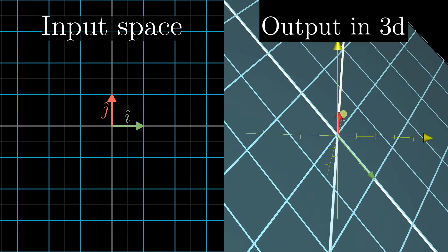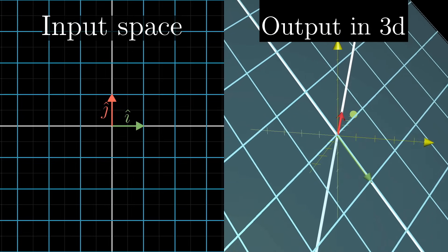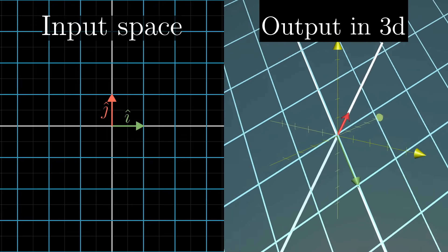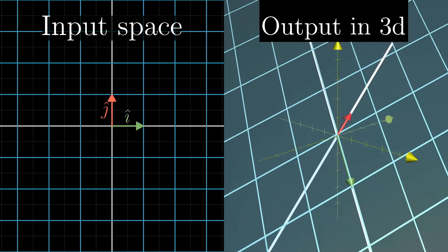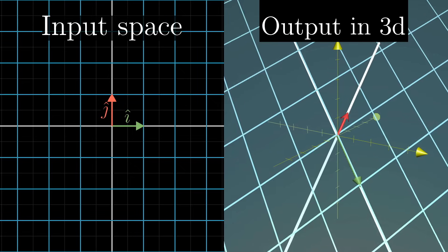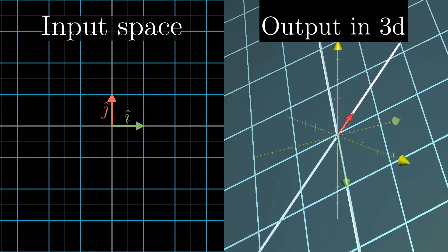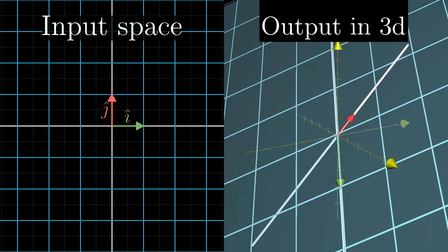What I have pictured here is the input space on the left, which is just 2D space, and the output of the transformation shown on the right. The reason I'm not showing the inputs move over to the outputs like I usually do is not just animation laziness, it's worth emphasizing that 2D vector inputs are very different animals from these 3D vector outputs, living in a completely separate, unconnected space.